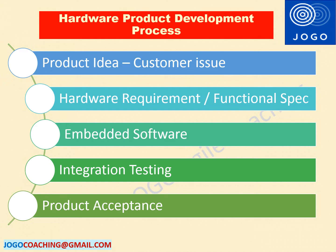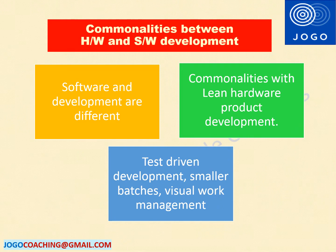Now let's understand the key differences between hardware development and software development. Software product development and hardware product development are different in many aspects. Agile software development has some commonalities with lean hardware product development — examples include test-driven development, smaller batches in development, and using visual work management.